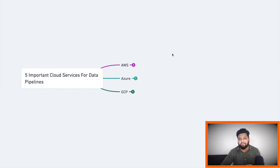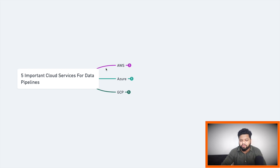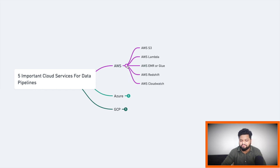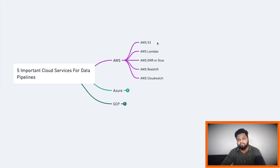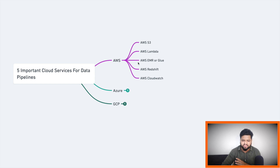Now I will give you another really important piece of information — the five important cloud services for data pipelines. As a cloud data engineer working on different cloud platforms, what are the top five services you must know to create data pipelines? Starting with AWS: first is AWS S3, which is the storage service. Next is AWS Lambda, which is a serverless service that doesn't need any infrastructure to execute and is available in different languages.